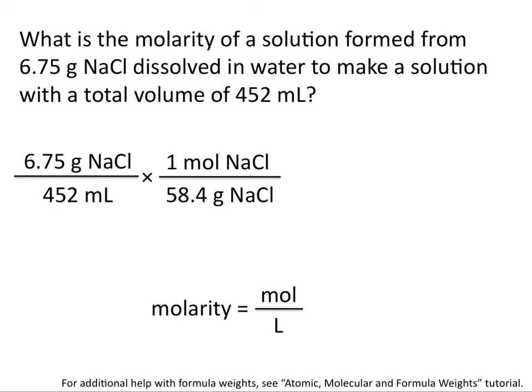We can use our periodic table to find the molar mass of sodium chloride, and you'll come up with 58.4 grams of sodium chloride per mole of sodium chloride. This allows us to cancel out grams. We now have units of moles per milliliter. But remember, molarity is moles per liter, so we need to convert milliliters to liters.